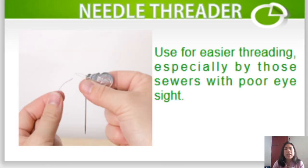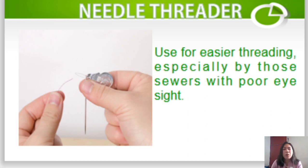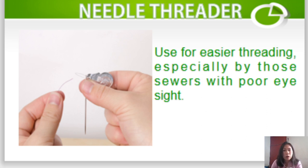Next is the needle threader. Needle threader is used for easier threading, especially by those sewers with poor eyesight. So if we are having difficulty inserting the thread inside the eye of the needle, we have to use the needle threader.